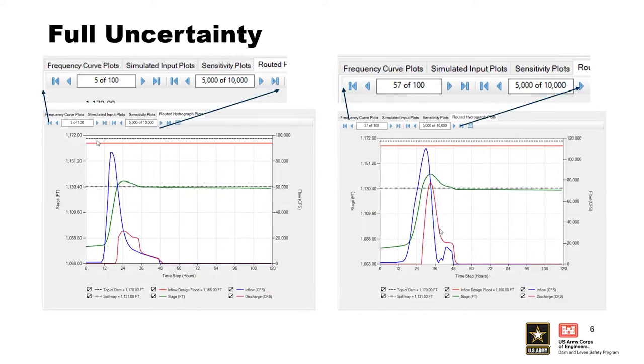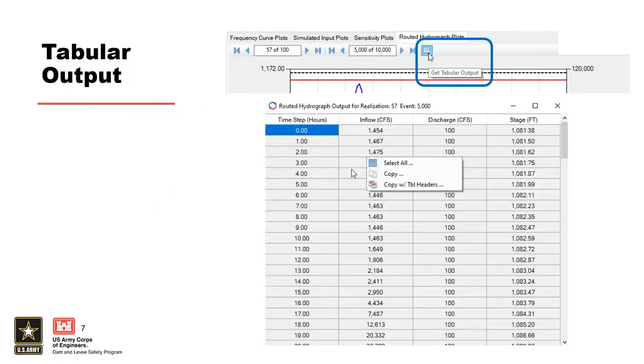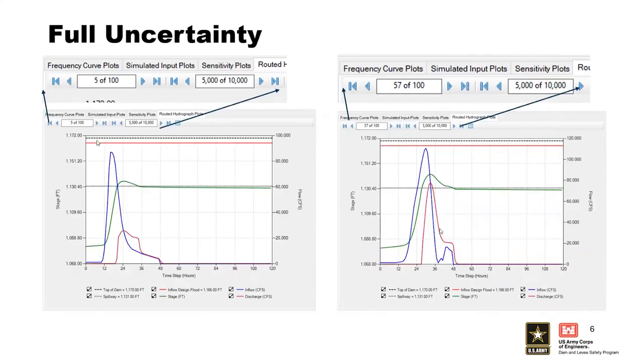The realizations are 57 out of 100 and 5,000 of 10,000. You can see that those are on the plots there.